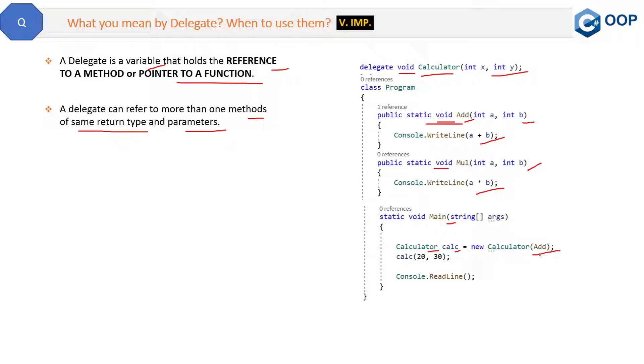This is a very important thing while using delegates: you can pass the method as a parameter inside the delegate, and then you can call the parameter values A and B to invoke the delegate. So this is how a delegate can be used in your client's program.